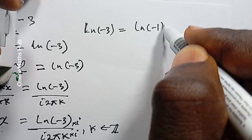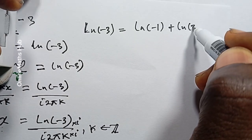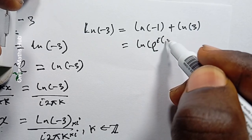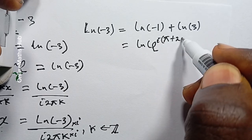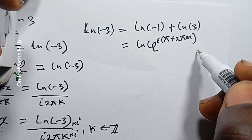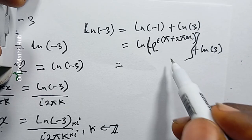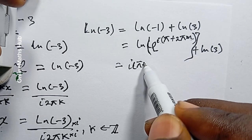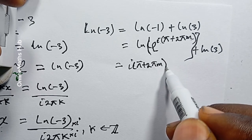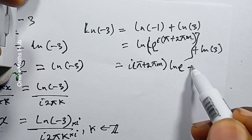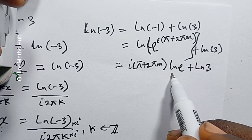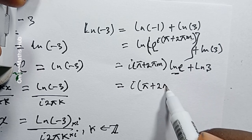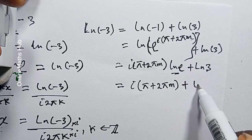So replacing negative one with e^(i(π + 2πm)), we can write ln(-3) = ln(e^(i(π + 2πm))) + ln(3). Bringing the exponent down, this becomes i(π + 2πm) times the natural log of e, plus the natural log of 3. Since ln(e) = 1, we get ln(-3) = i(π + 2πm) + ln(3).